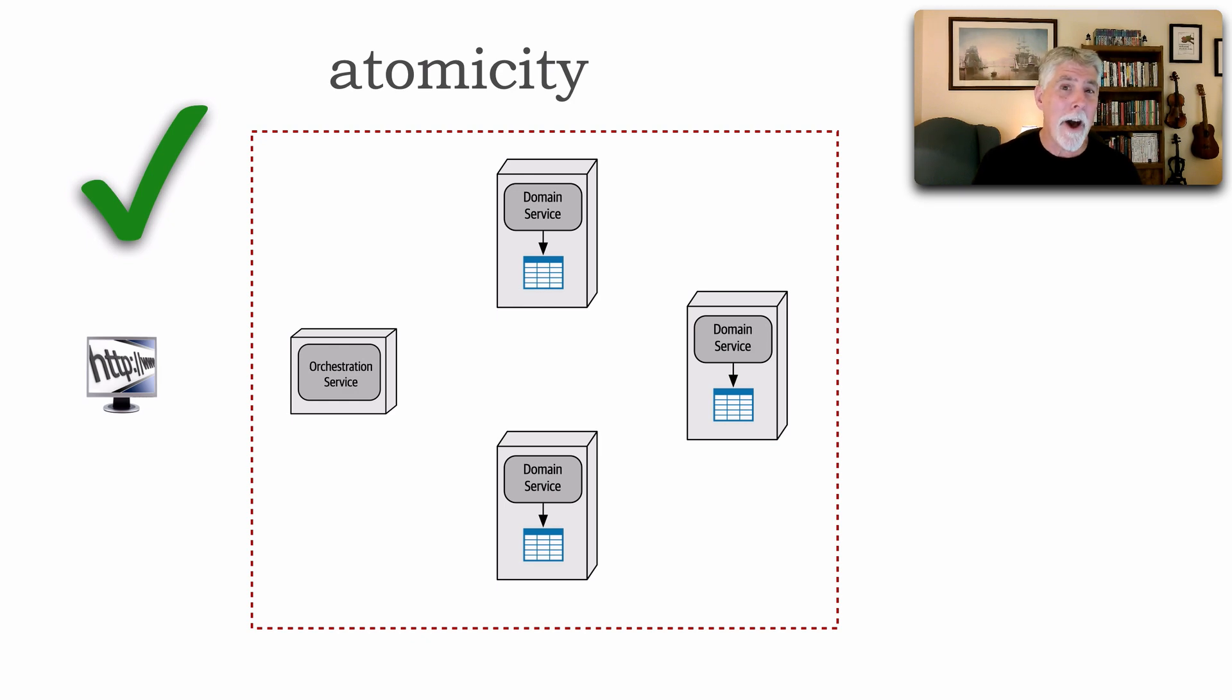When we talk about atomicity, atomic transactions in a distributed architecture, picture this scenario where I've got three domain services that are all involved in this particular transaction, and an orchestration service that coordinates all of that work. Let's do a transaction. In a happy path, the user submits a request to the orchestrator and waits. Let's say we're placing an order.